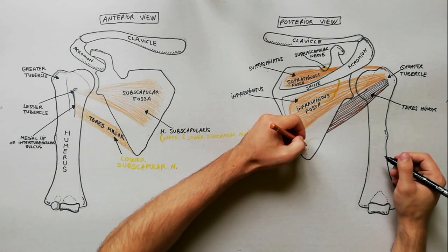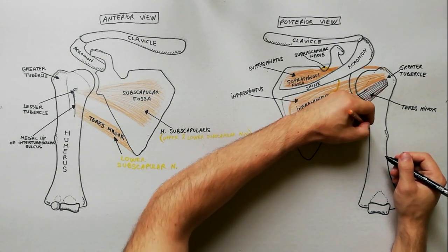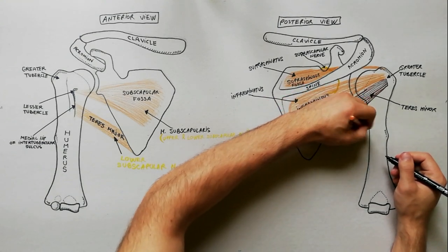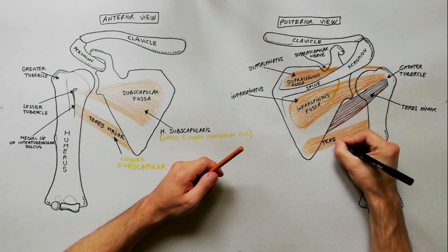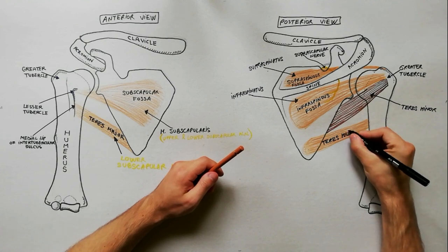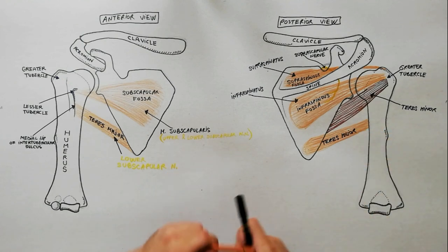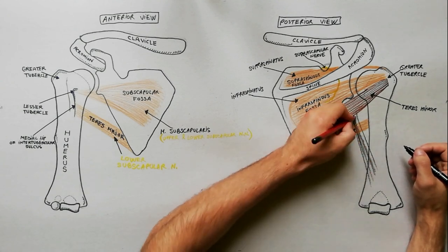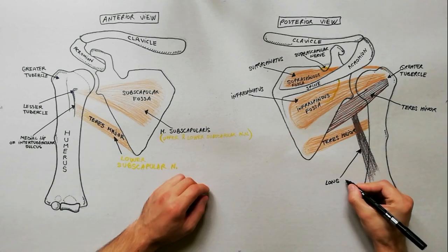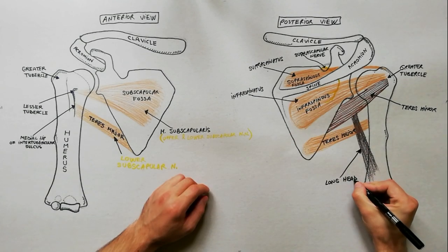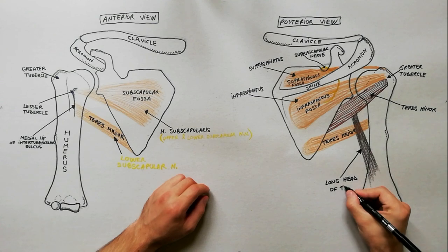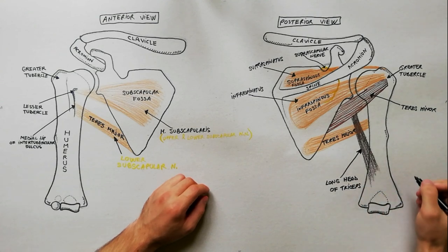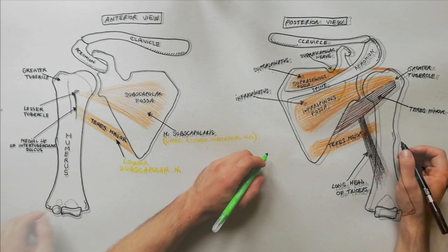We can also draw on this diagram the teres major muscle with its fibers originating from the posterior aspect of the inferior angle of the scapula. Though it is not a muscle of the shoulder, we will also draw the long head of triceps brachii, whose fibers come from under the teres minor after originating from the infraglenoid tubercle of scapula.